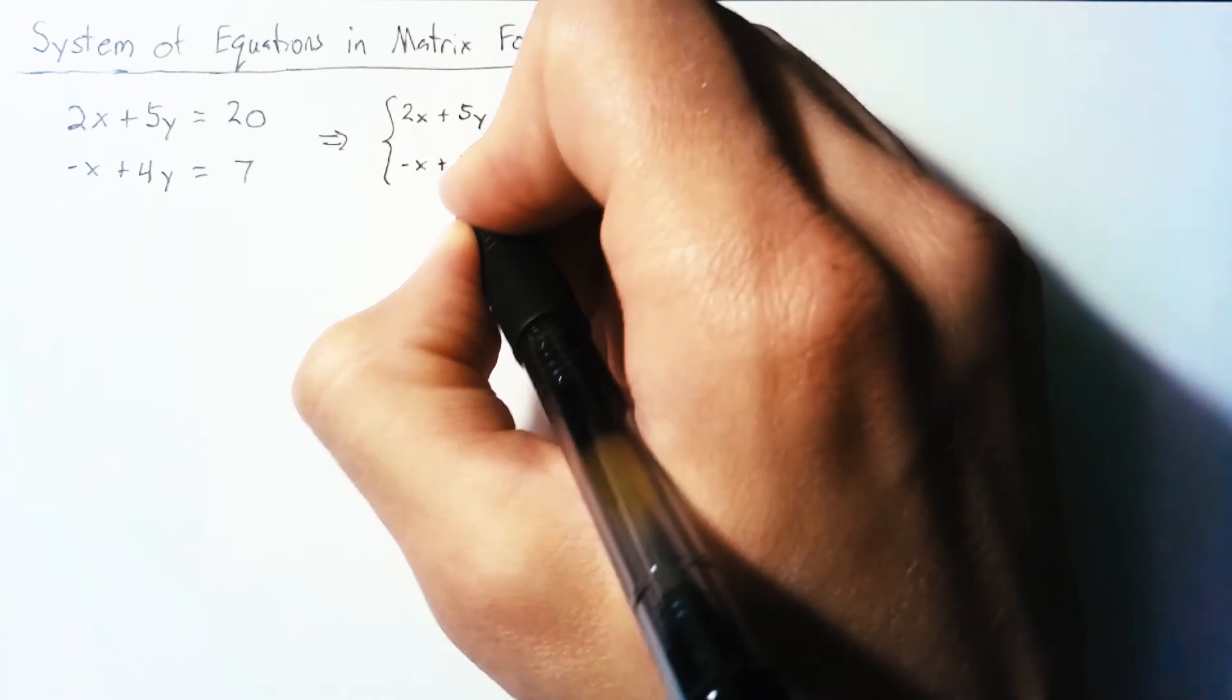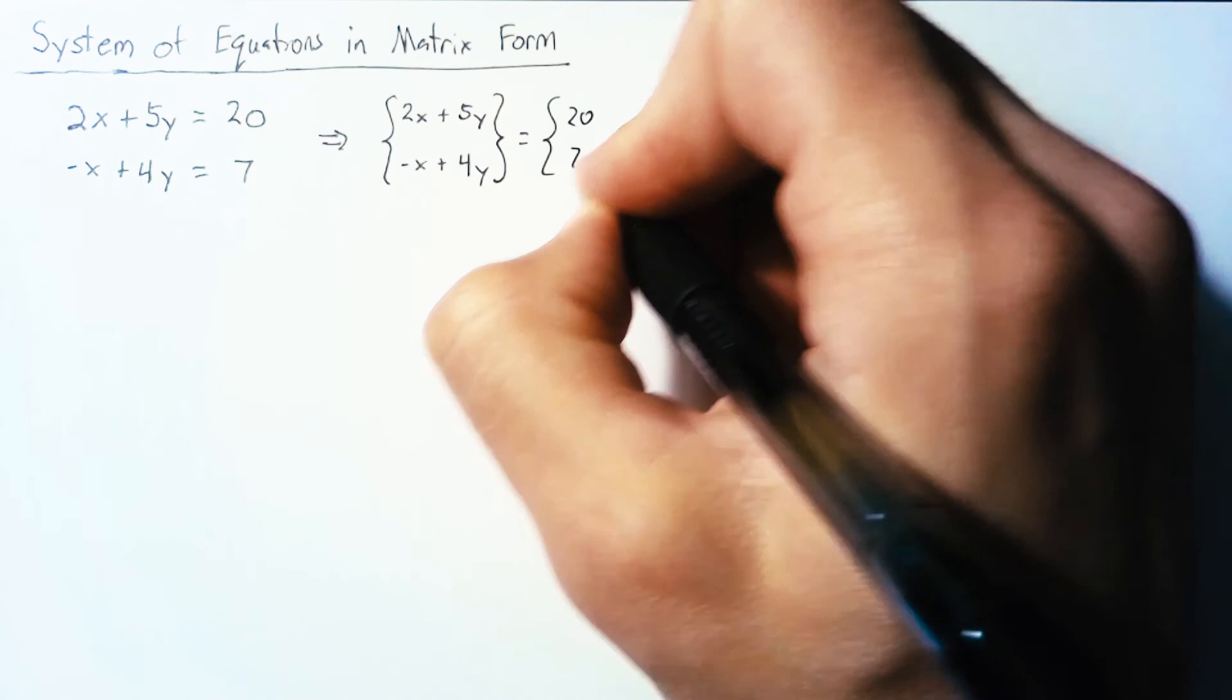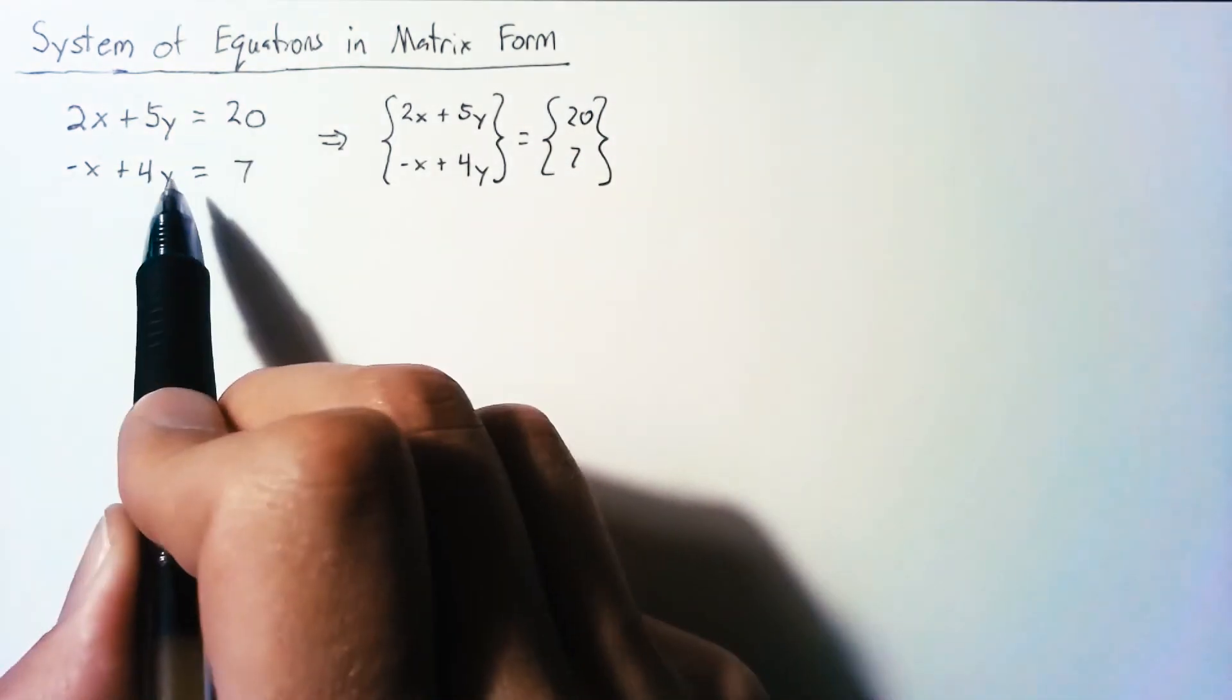In order for two vectors to be equal, each of their elements needs to be equal, which means that this equation is the exact same thing as this system of equations.